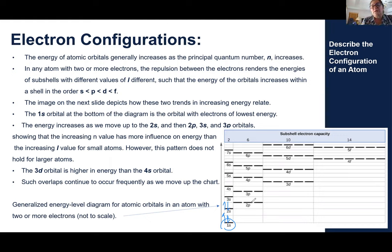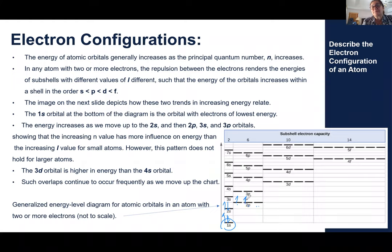Then it would go to 2P. The 2P sub-level has three orbitals — specifically 2Px, 2Py, 2Pz. We don't have to differentiate at this level, but we have 2Px, y, and z. They all have the same energy level. So the fifth electron — because the first two go to 1S and the next two go to 2S — electron five would go to the first P orbital. Electron six would go to the second P orbital, because they are at the same energy level.